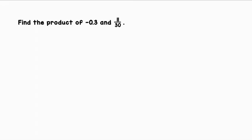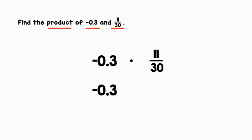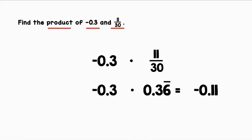Find the product of negative 0.3 and 11/30. Product means to multiply. Our two values are negative 0.3 and 11/30. We have one decimal and one fraction, so let's make sure they're in the same form by converting our fraction to a decimal. 11 divided by 30 equals 0.36 repeating — the line is over the 6 because that's the digit that repeats. Our product is negative 0.11, because a negative times a positive is a negative.